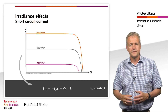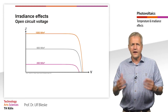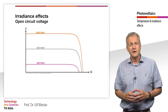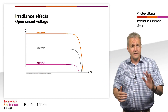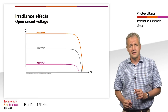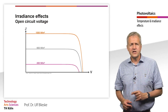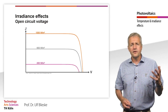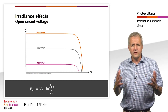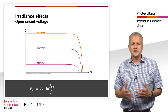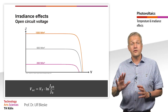As you can see, a change in irradiance also affects the open-circuit voltage. With increasing irradiance, the open-circuit voltage also increases, but less than the short-circuit current. Let's examine this effect in more detail. At the beginning of this chapter, we derived an equation for the open-circuit voltage for an ideal solar cell. We have seen that the open-circuit voltage depends on the temperature voltage and the logarithm of the photocurrent divided by the reverse saturation current.